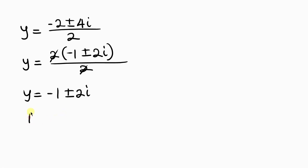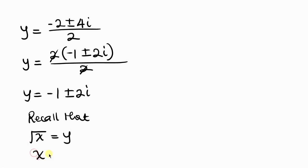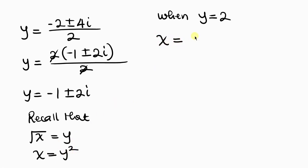Recall from our substitution: the square root of x equals y, and x equals y squared. For Case 1, when y equals 2, x equals 2 squared, which equals 4. This is the real solution for x.